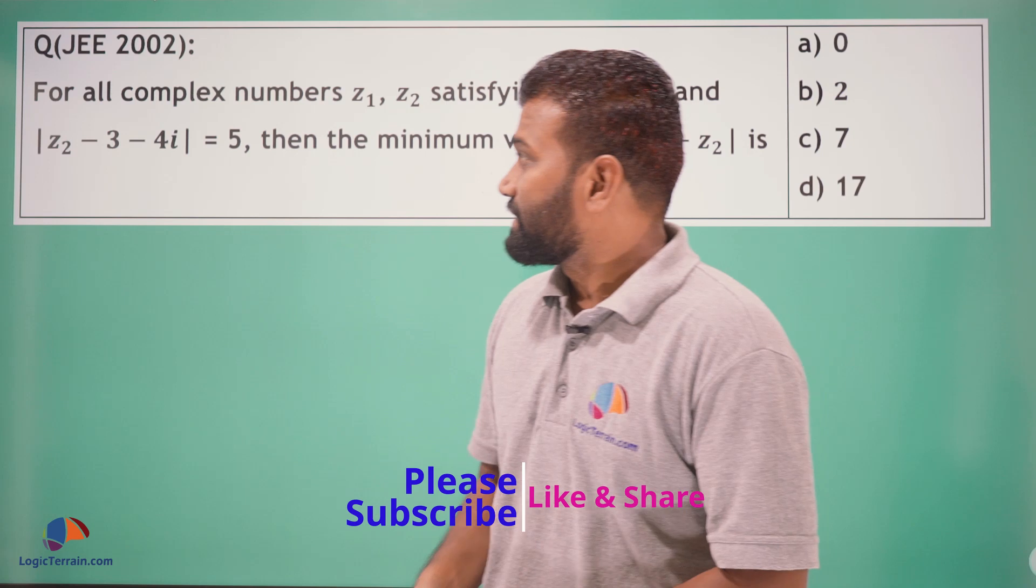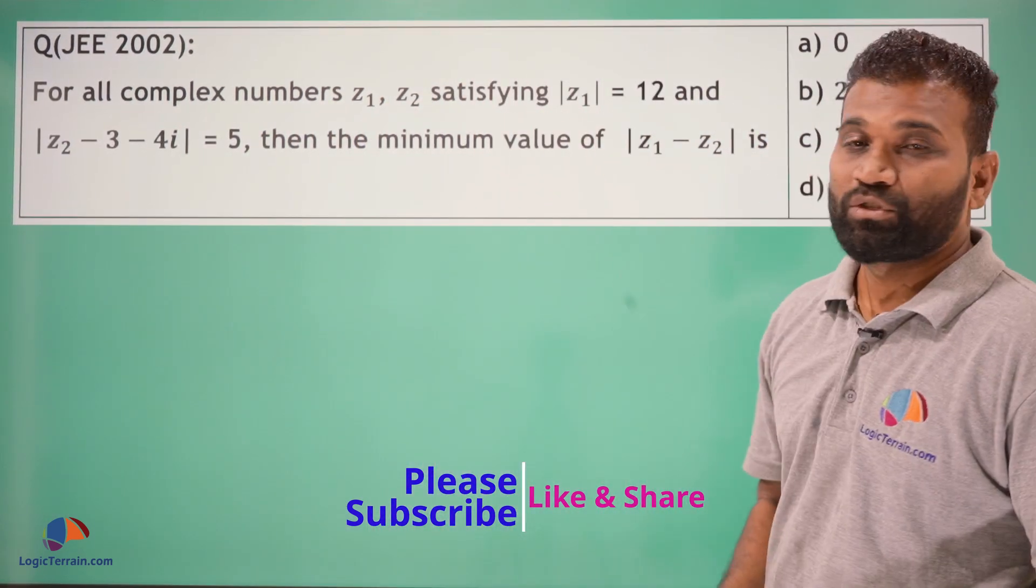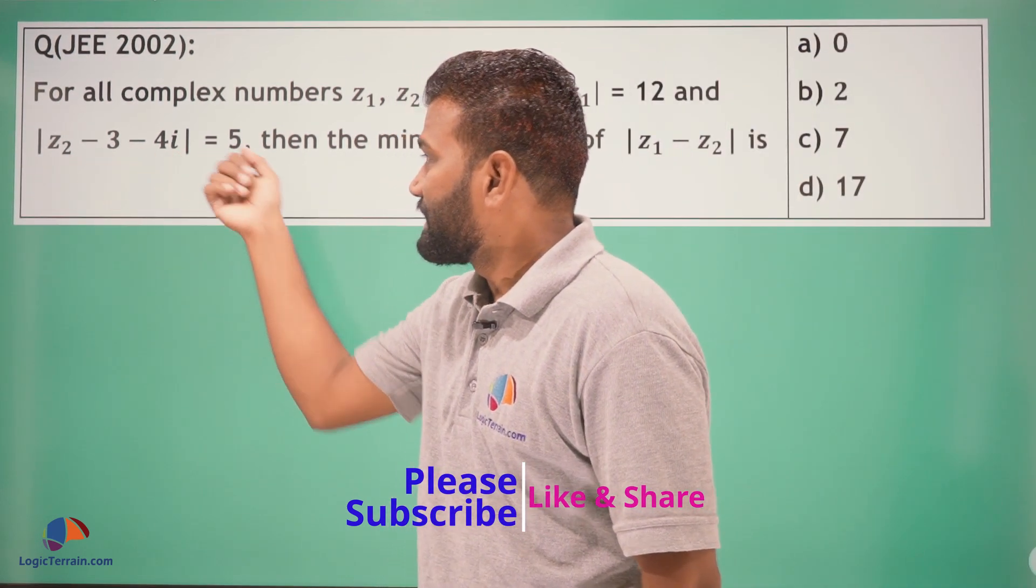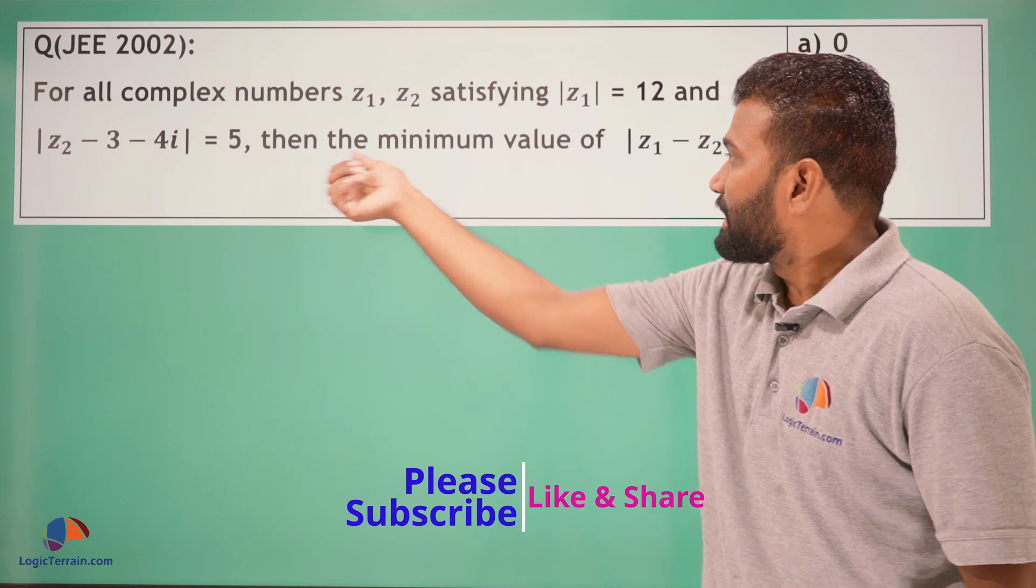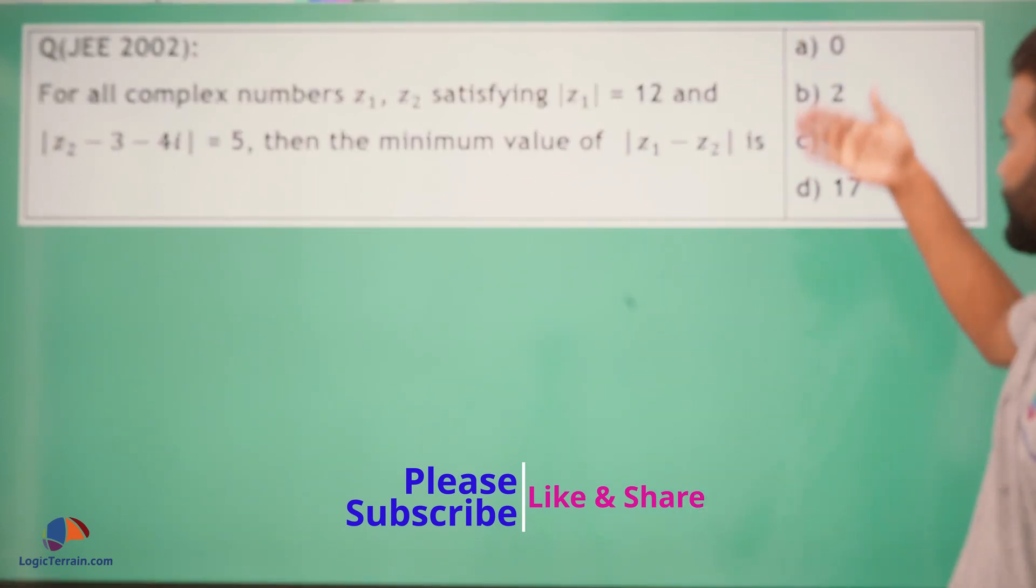The statement is this: For all complex numbers Z1, Z2 satisfying modulus of Z1 is equal to 12 and modulus of Z2 minus 3 minus 4i is equal to 5, then the minimum value of modulus of Z1 minus Z2 is. Here are the options.